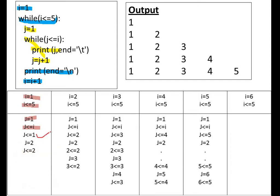One less than or equal to one is true, so it prints j with a tab, and the cursor moves forward. Next, j equal to j plus one, so j becomes two. Now it checks j less than or equal to i: j is two, i is one, so two less than or equal to one — the condition is false. When the condition gets false, it moves to the outer loop, which executes end slash n, moving the cursor to the next line.